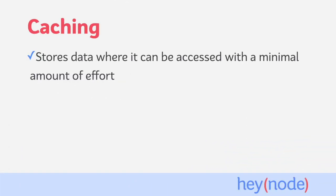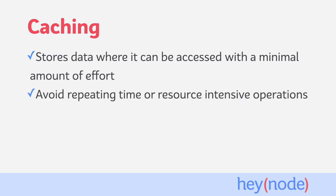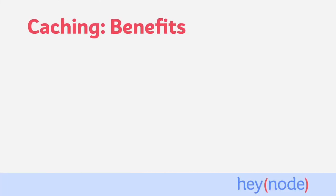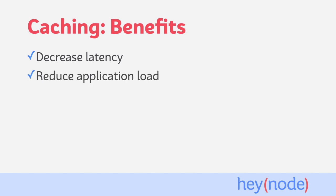Caching temporarily stores data somewhere that it can be accessed quickly with a minimal amount of effort. Typically, you'll cache the result of a time or resource-intensive operation. This allows you to retrieve the result of the operation without having to perform the costly operation again. In the context of an Express API, we can cache the result of some API requests so the application doesn't have to repeat the work to generate the response. The main benefits of implementing caching for an API are decreasing latency — cached requests are served in a fraction of the time of uncached requests — and reducing application load. The server does much less work to serve cached results than computing a response for every request.